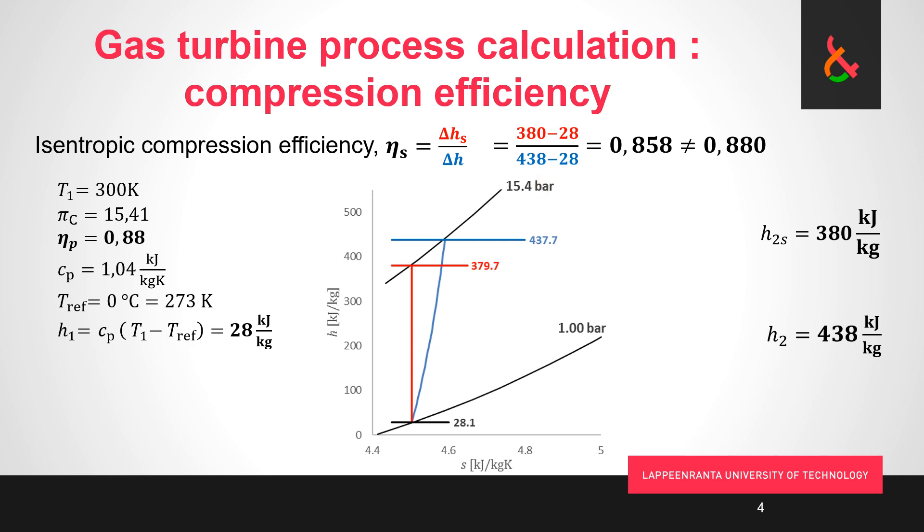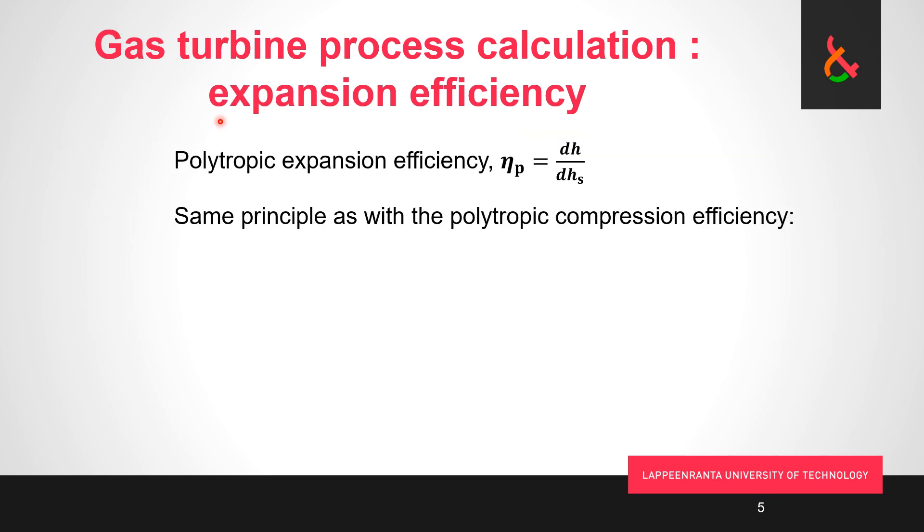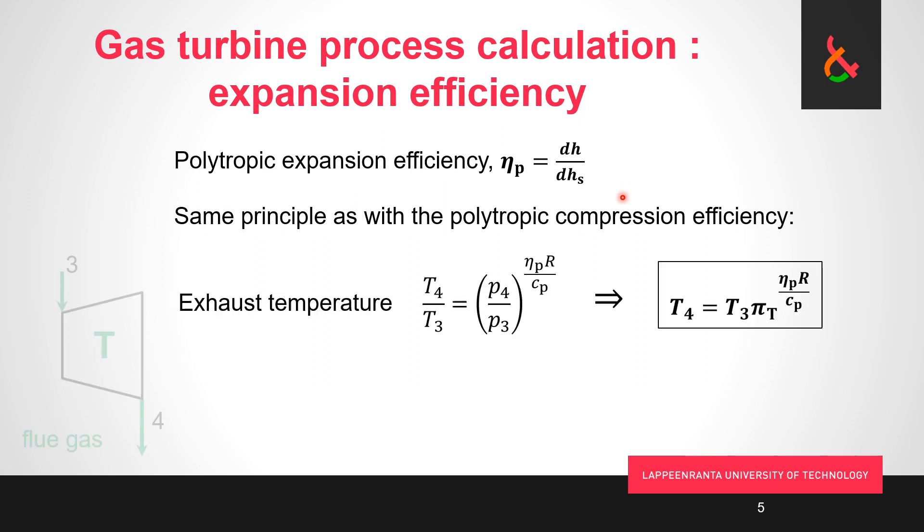If we talk about expansion, then same idea: polytropic expansion efficiency, differentially small pressure decrease and the related actual and ideal delta h's. Same kind of equation. The only difference here is that now our efficiency jumped from here to the top in the exponent. So that's the only thing to remember.